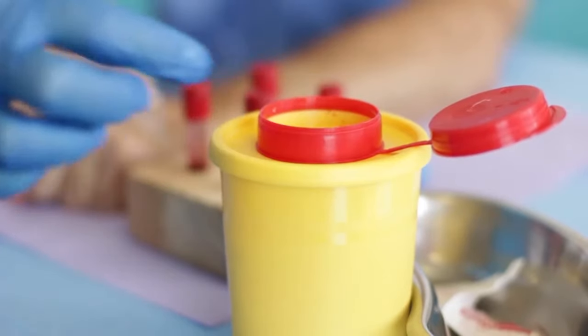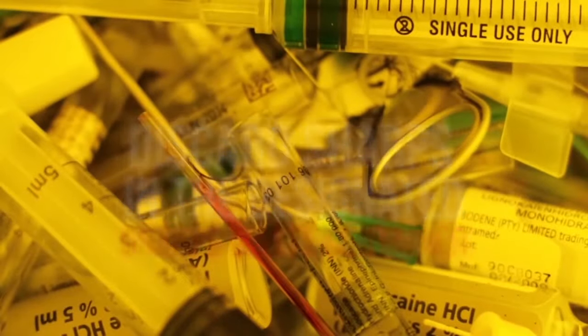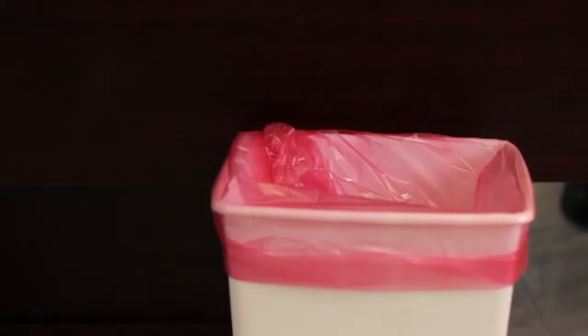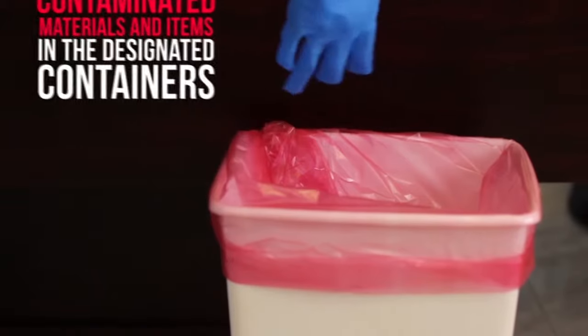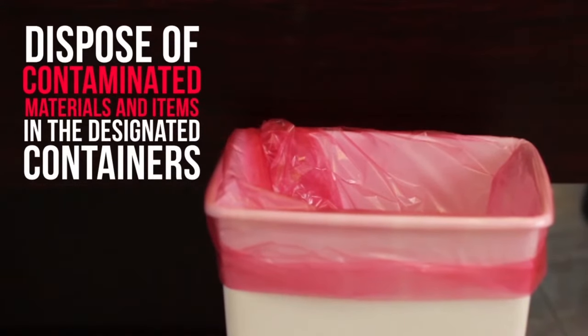Discard sharps, the used needles, broken glass, and syringe or blood sampling device into a puncture-resistant sharps container. Place items such as used gloves and all items contaminated with blood or bodily fluids into the infectious waste.